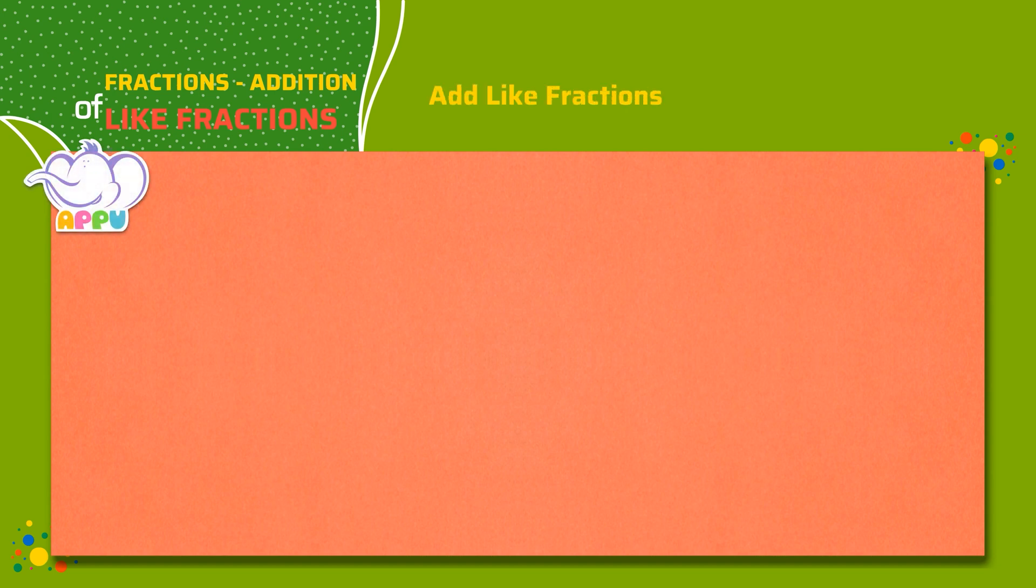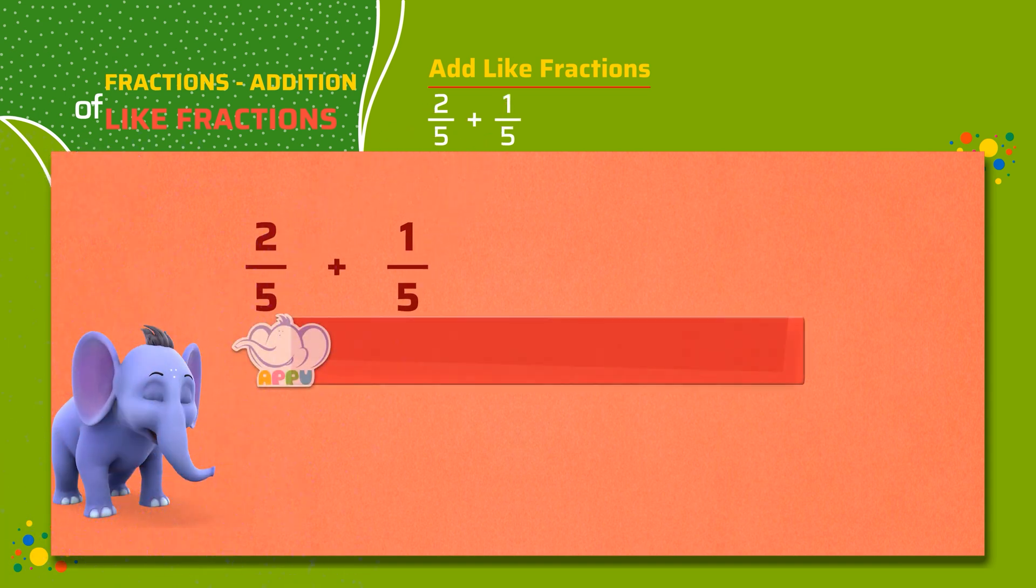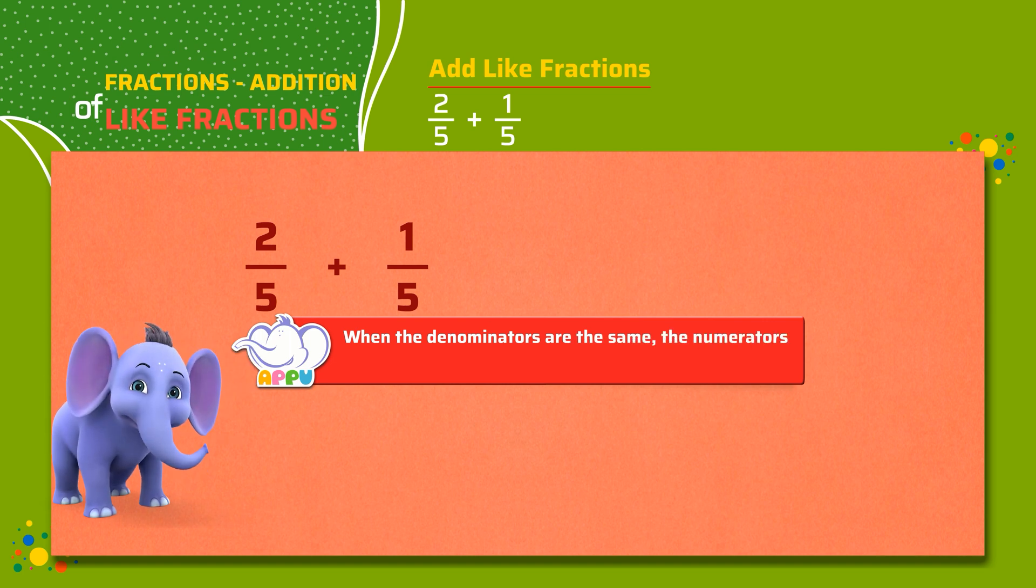Add like fractions. 2 by 5 plus 1 by 5. We know that when the denominators are the same, the numerators of the fractions can be added.